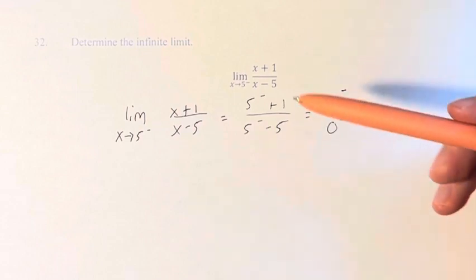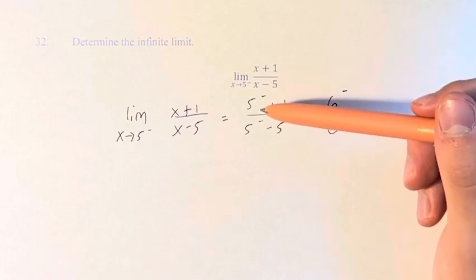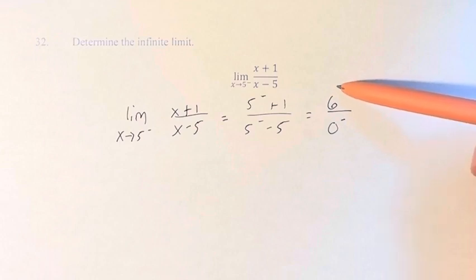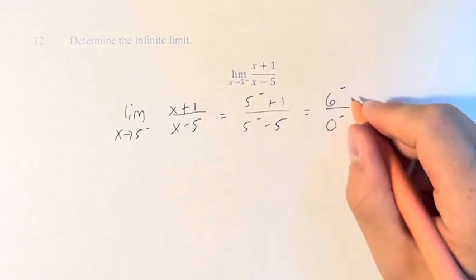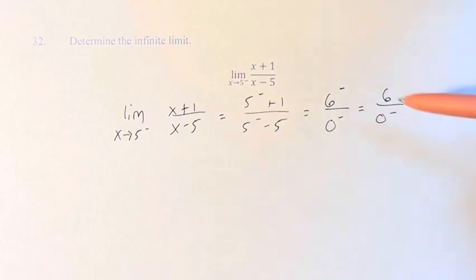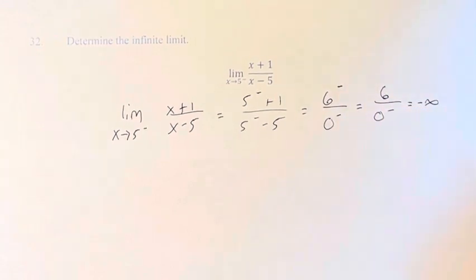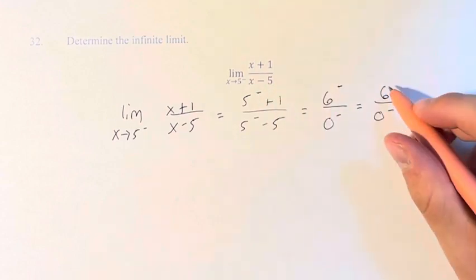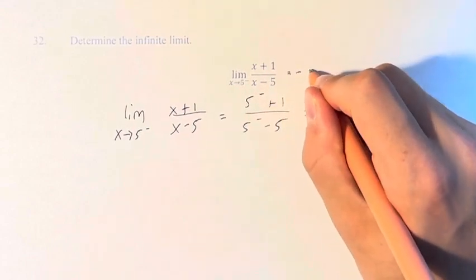What does this actually mean? Well, 5 plus 1 is 6, and 5 minus 5 is 0. Since these values are slightly less than 5 — because they're coming at it from the left — their differences will be slightly less than 0. Approaching 0 from the left means we have a number divided by numbers approaching 0, so it goes to negative or positive infinity. Since we have a positive number divided by a negative number, this equals negative infinity. Think of this as 6 divided by negative 0.00000001, which goes off to negative infinity.